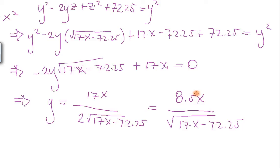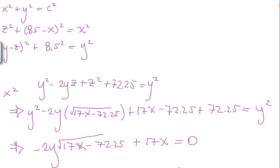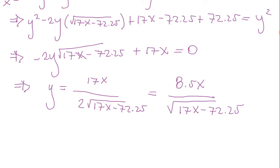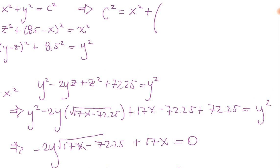So this is the Y that we need to substitute in our primary equation, right? So this implies that C squared equals X squared plus Y squared. But what is Y? Y is 8.5X divided by the square root of 17X minus 72.25.